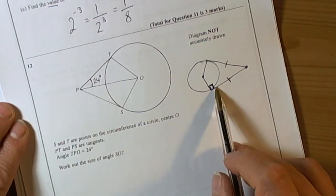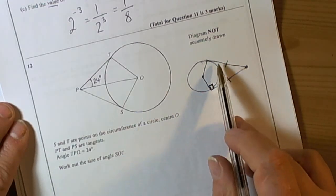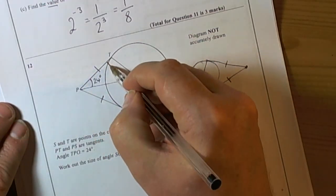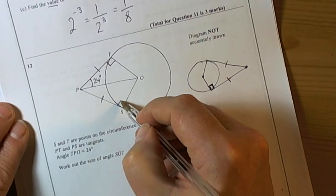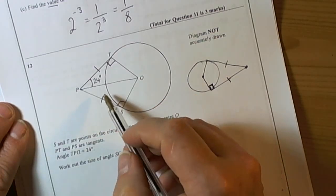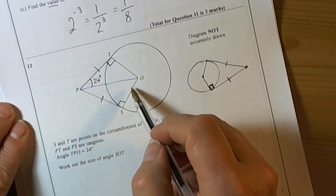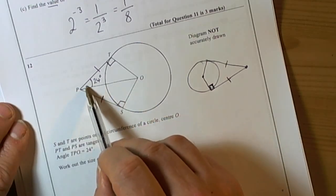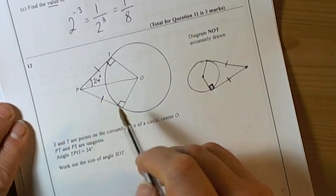Now because of the theory of tangents coming from a fixed point being of equal length, we know that we have 90 degrees for each angle here because of the tangents, and therefore we've got a regular kite. So that means that this triangle here is identical to this triangle here.